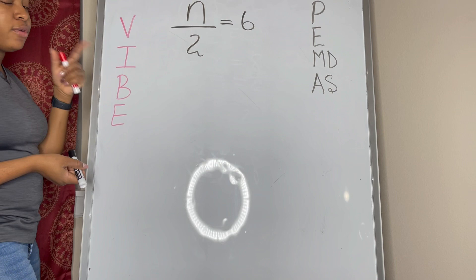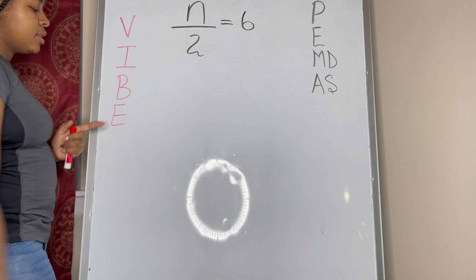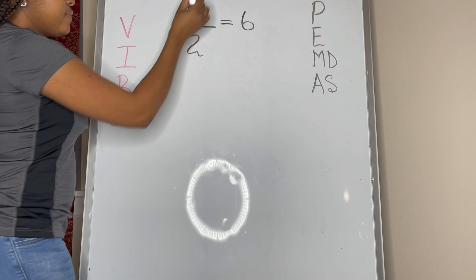I, we need to isolate that variable by performing the inverse of whatever operations are being done on that side. B, we need to balance, which is we do everything on both sides. So if we do something on this side, we need to also do it on that side. And then E, we need to evaluate.